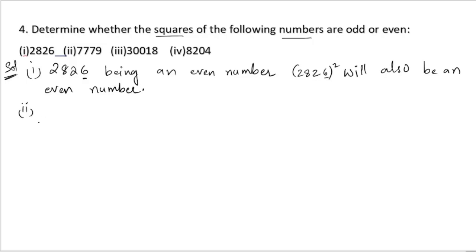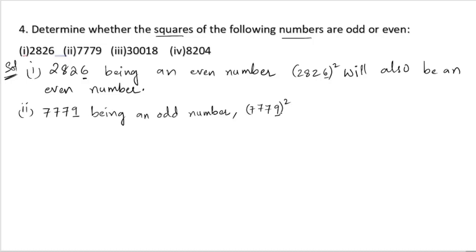For the second number, 7779, the last digit nine represents that this is an odd number. For 7779 squared, the square of nine is 81, giving units digit one, which is an odd number — so the square will also be an odd number.